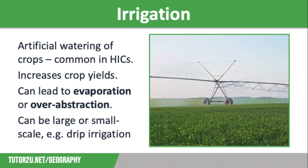Sprinkler systems pipe water into a central point in a field to sprinkle water onto crops. These are used in fields mostly in HICs and can be moved around to ensure even coverage. LICs are more likely to use drip irrigation, where water travels through pipes with tiny holes spread across crops, so water is delivered straight to the roots before it can evaporate.